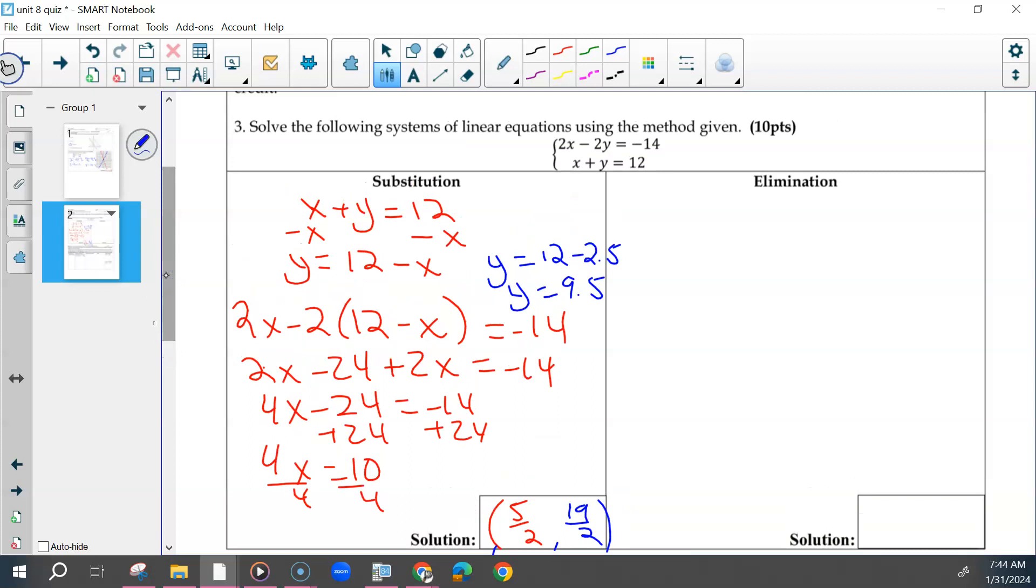Again, there were different ways to do elimination. Most of us multiplied this second one by 2, but some of us also multiplied this one by 2 and this one by 4. There were different numbers. We're going to multiply this one by 2, so that this becomes 2x minus 2y equals negative 14, and 2x plus 2y equals 24.